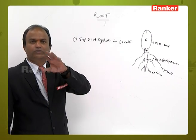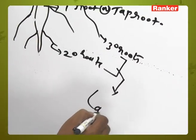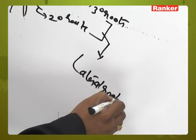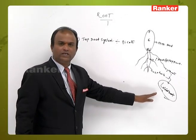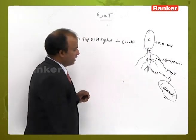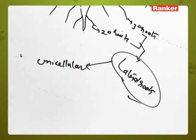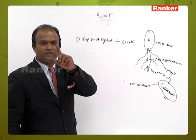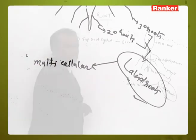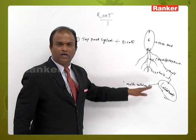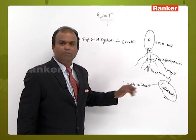The secondary and tertiary roots can be called lateral roots. These lateral roots are multicellular — not unicellular. Root hairs are unicellular, whereas lateral roots are multicellular.